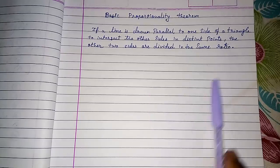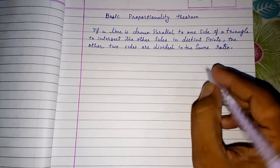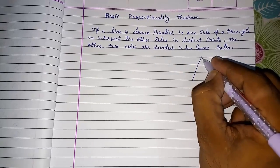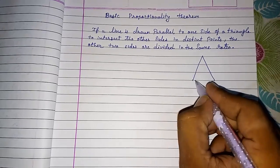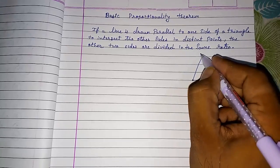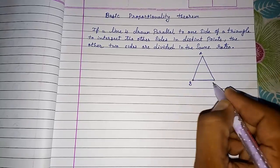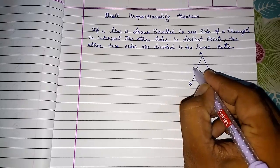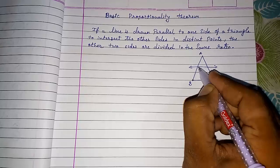You will not understand anything from this. I am drawing a figure so that you come to know. They are telling if a line is drawn parallel to any side. If I am taking a triangle ABC and I am drawing a line parallel to BC like this, and it is intersecting at two points.